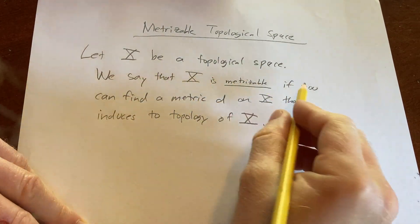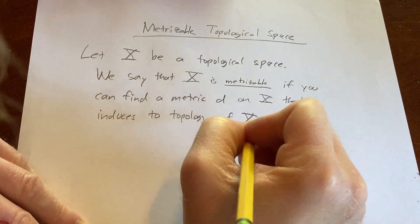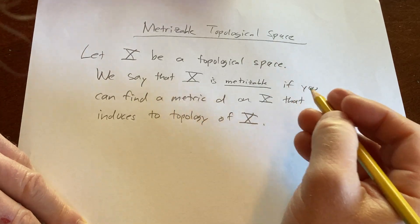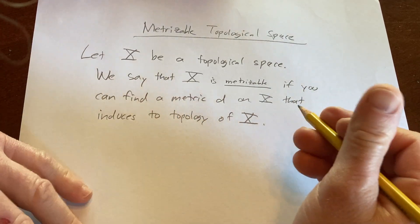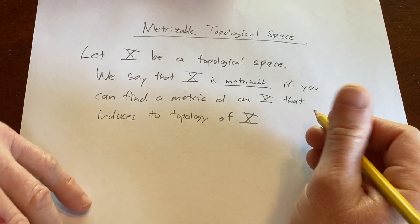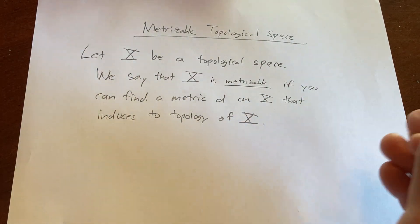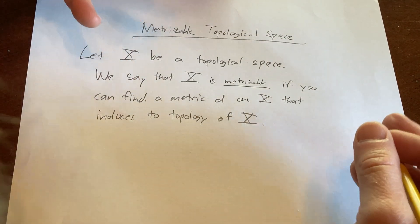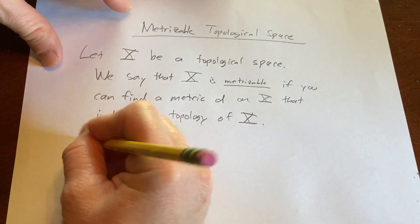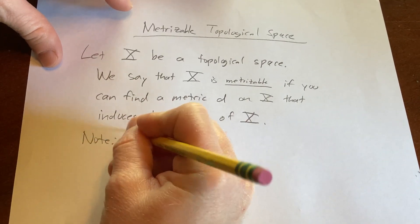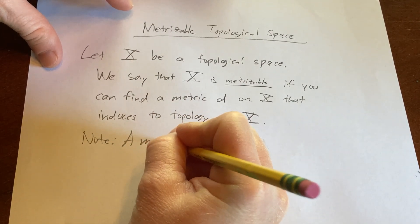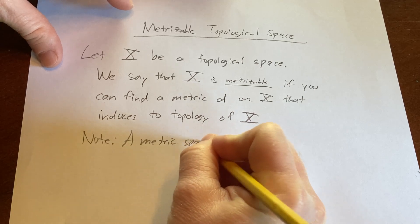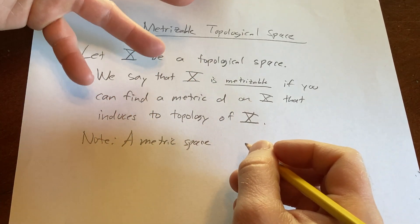So X is metrizable if you can find a metric d that induces the topology of X. Note: A metric space is a metrizable space X together with a specific metric d that gives the topology of X. You could take this as the definition of metric space.